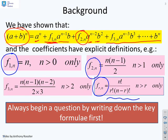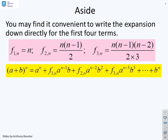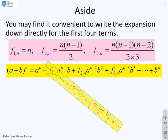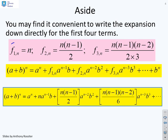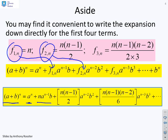I suggest you always begin a question by writing down these key formulas. Rather than writing them all out separately, you could substitute the coefficients straight in. So write down that A plus B to the N equals A to the N, plus N times A to the N minus 1 times B, plus N(N-1) over 2 times A to the N minus 2 times B squared, plus the third coefficient times A to the N minus 3 times B cubed, and so on.